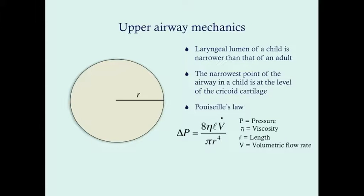The best way to understand airway mechanics is to first consider the basic lumen. The laryngeal lumen of a child is, of course, going to be narrower than that of an adult just because they're smaller. The narrowest point of the airway in a child is at the level of the cricoid cartilage, which is just inferior to the thyroid cartilage. This differs from adults — in adults, the narrowest point is at the level of the vocal cords.